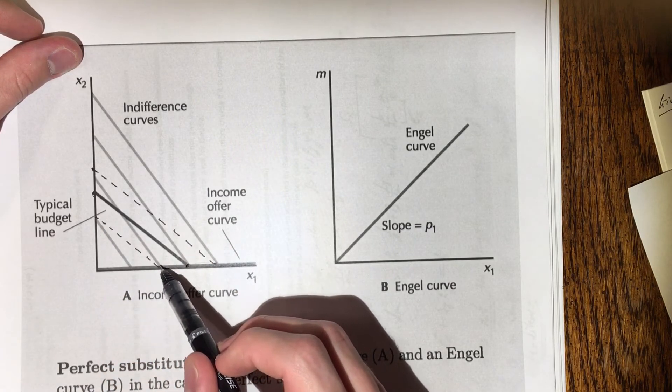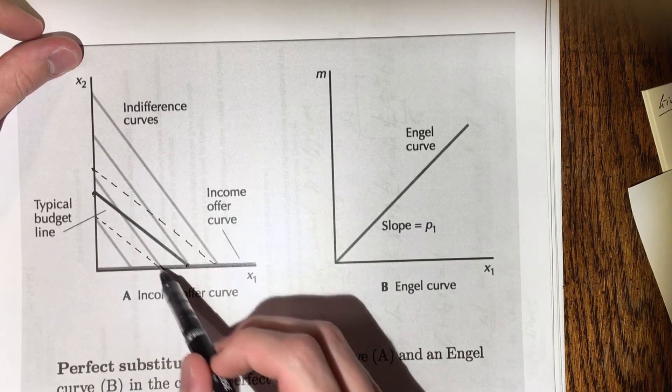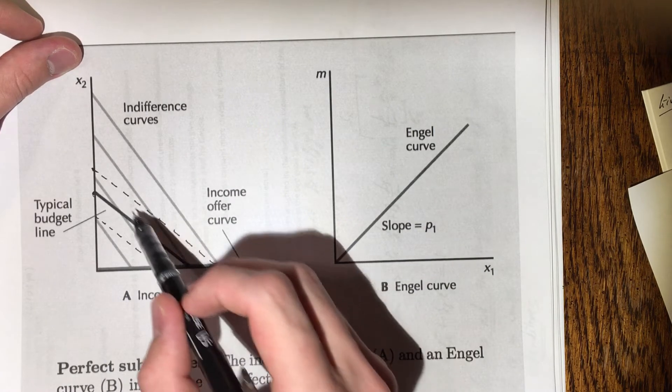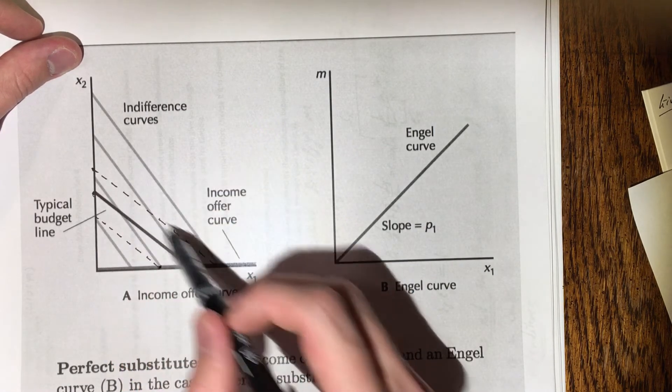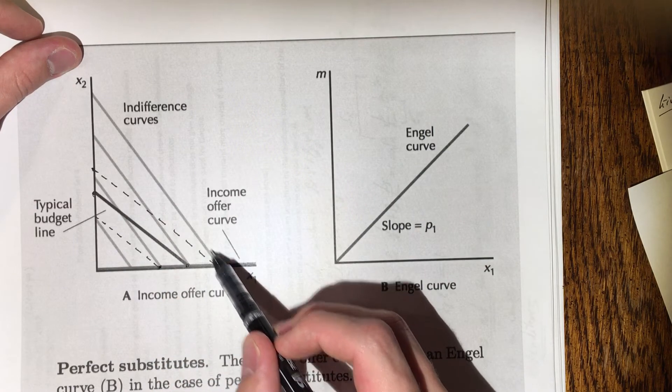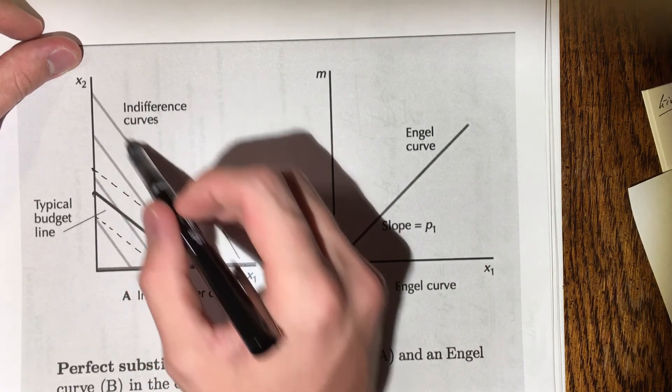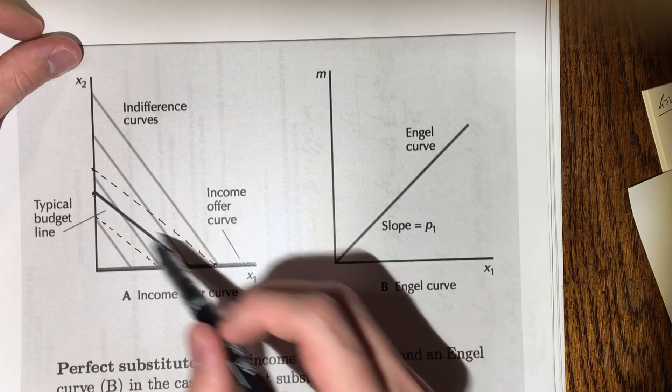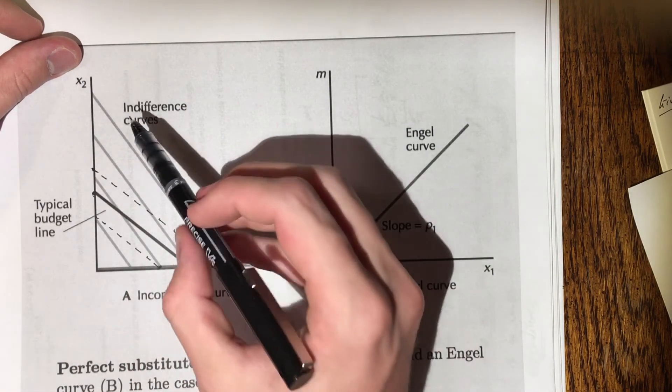Take a higher income here, an m prime. It intersects the indifference curve here, so we know that the optimal bundle is here. So we know in perfect substitutes that the indifference curve is not going to have necessarily the same slope as the budget line, so it typically has a corner solution, which is what we're seeing here.